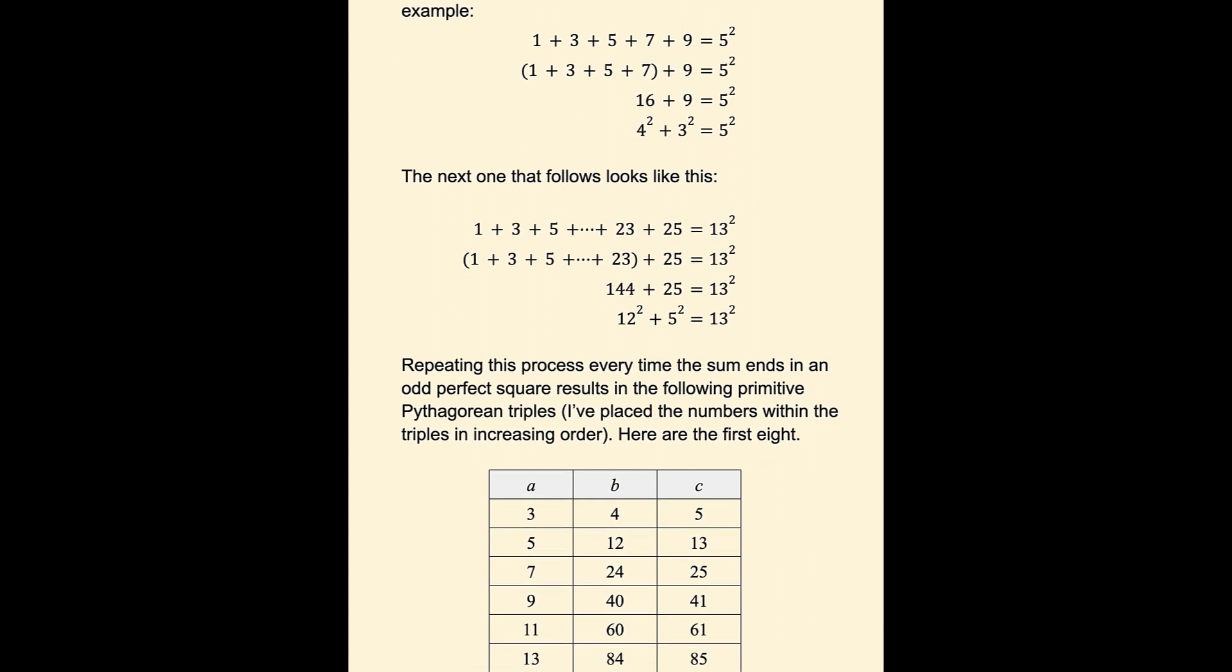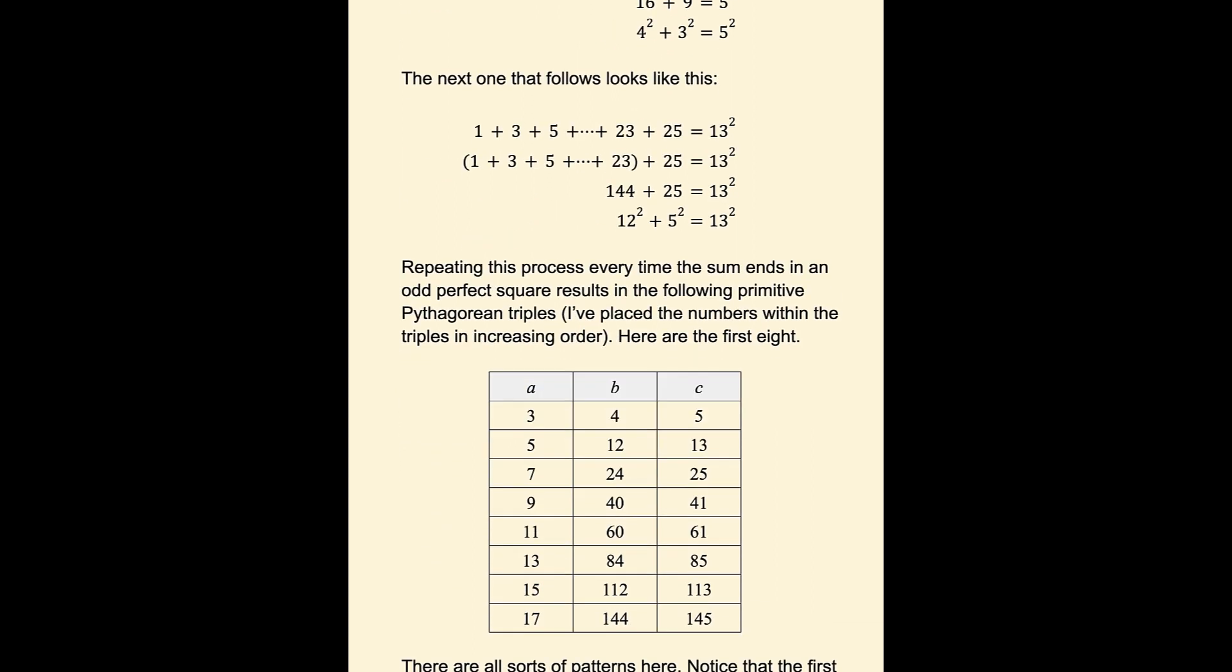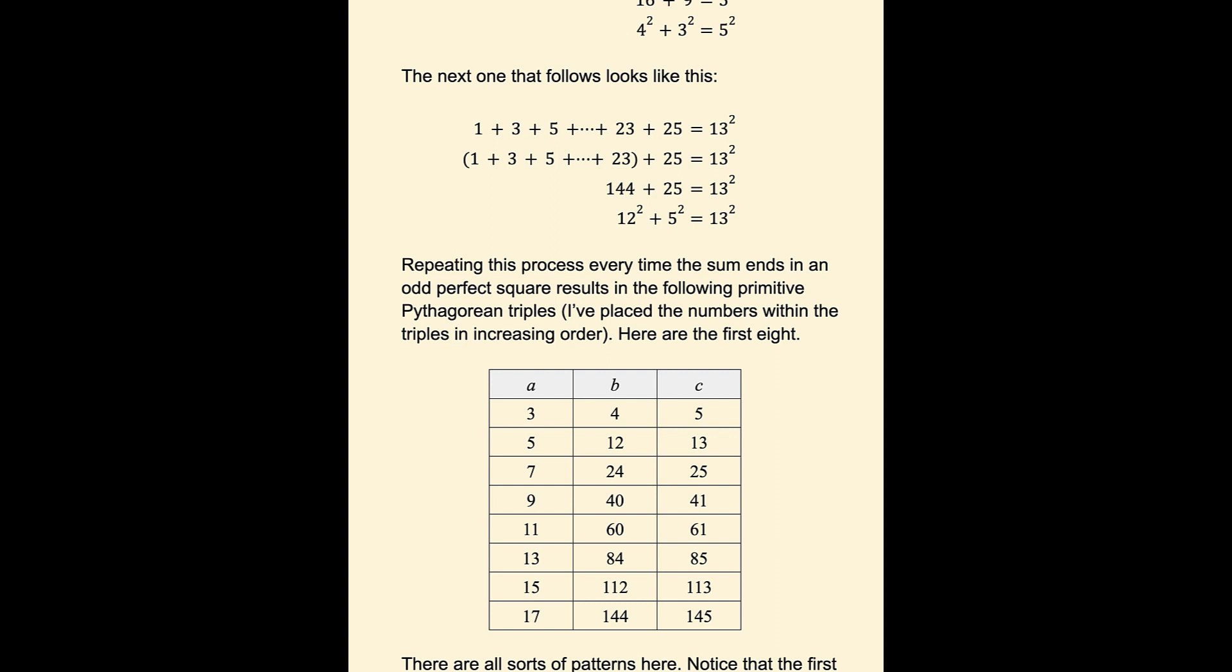The next one that follows would be the one that ends in 25. So when you add up the odd numbers from 1 to 23, you get 144, which is 12 squared. So there we have another Pythagorean triple, 12 squared plus 5 squared equals 13 squared.